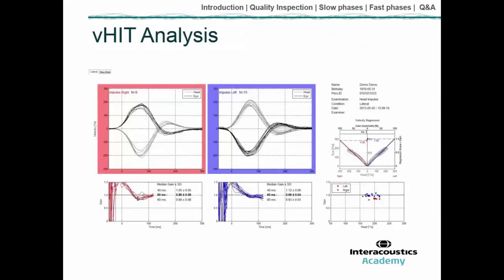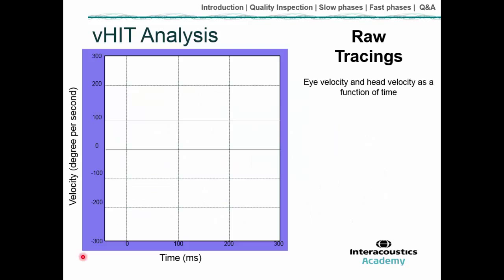Once you've completed the examination, you'll get a report displaying several graphs. At first you may feel daunted, but the results are very concise and easy to understand. The first graphs show raw tracings recorded with the video head impulse test, displaying velocity as a function of time, comparing eye velocity and head velocity.